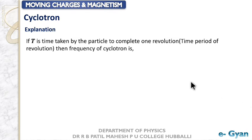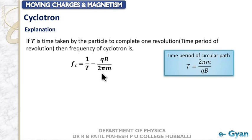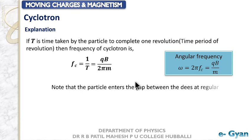If capital T is the time taken by the charged particle to complete one revolution, then the frequency of the cyclotron is fc = 1/T. Using the formula for a charged particle going in a circular path, we get fc = qB / (2πm). Further, the angular frequency ωc = qB / m.